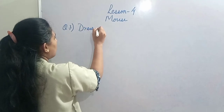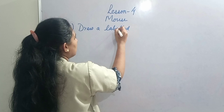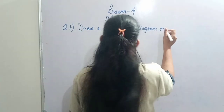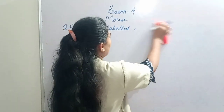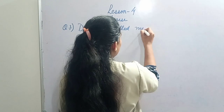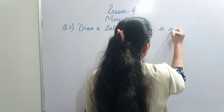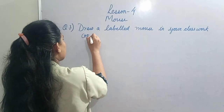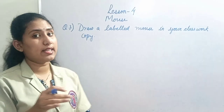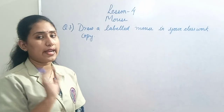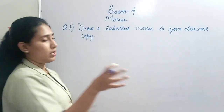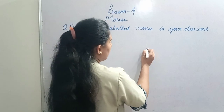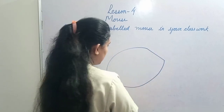The first question is: Draw a labelled diagram of a mouse in your classwork copy. This is your homework. What you have to write is the heading 'Drawing of a Mouse'. You can also draw a handle. So as homework, draw a labelled mouse in your classwork copy. First, you have to make a drawing of a mouse - draw it like this.